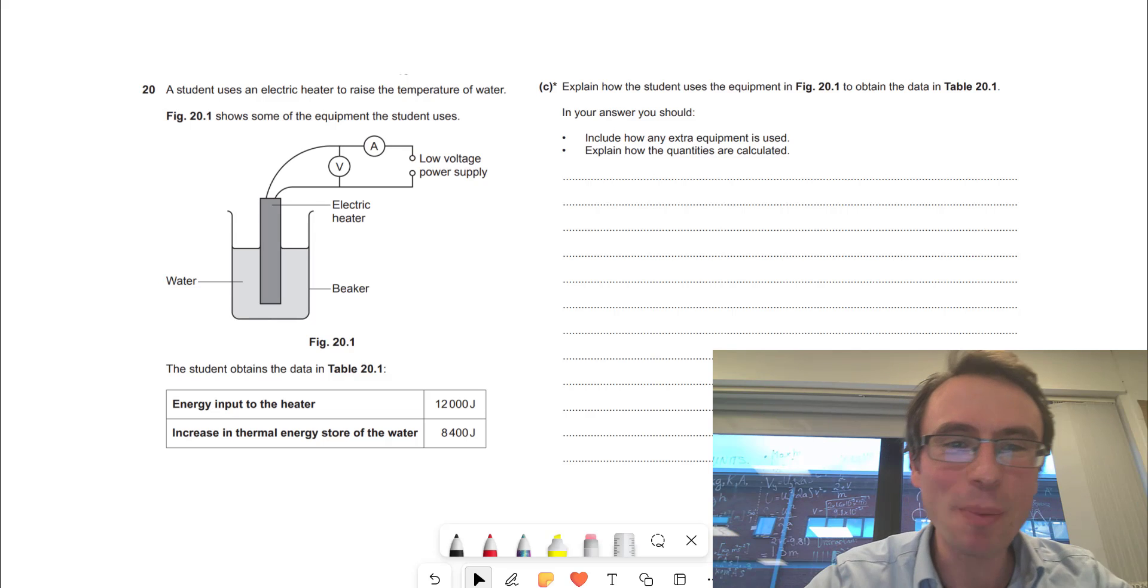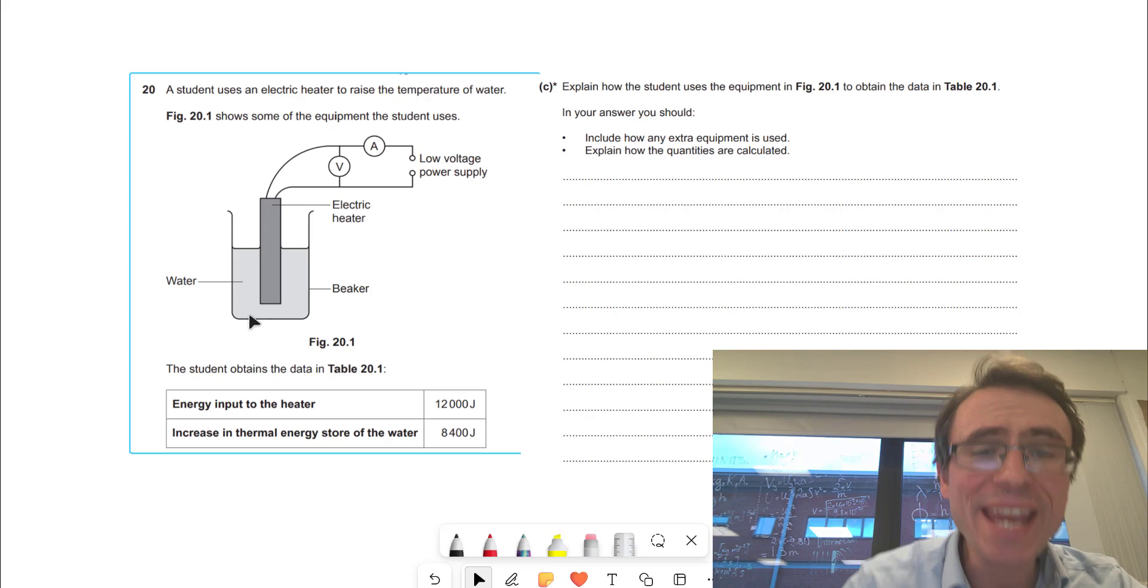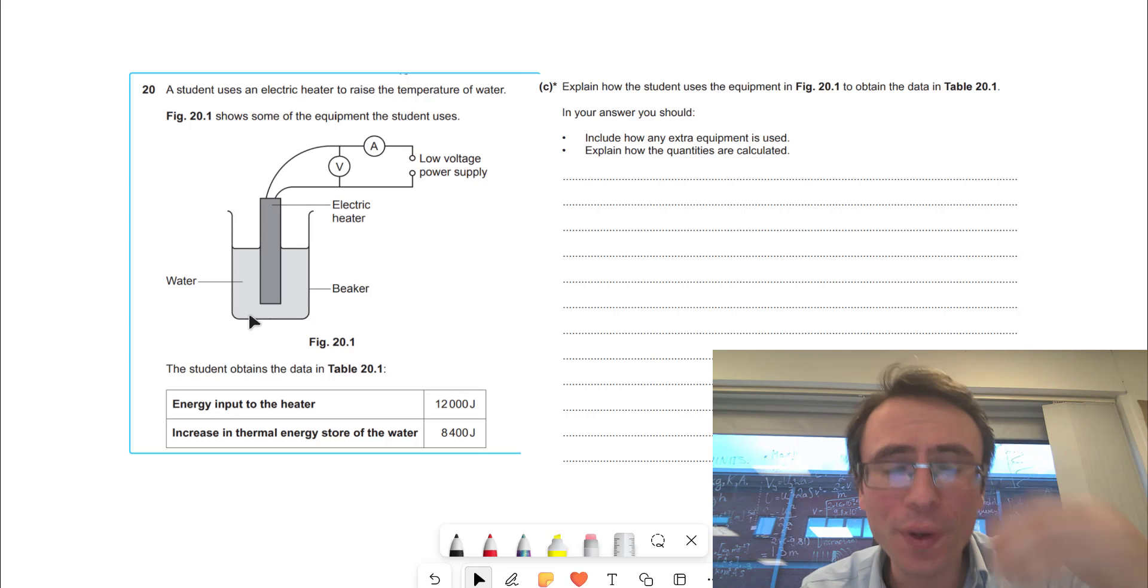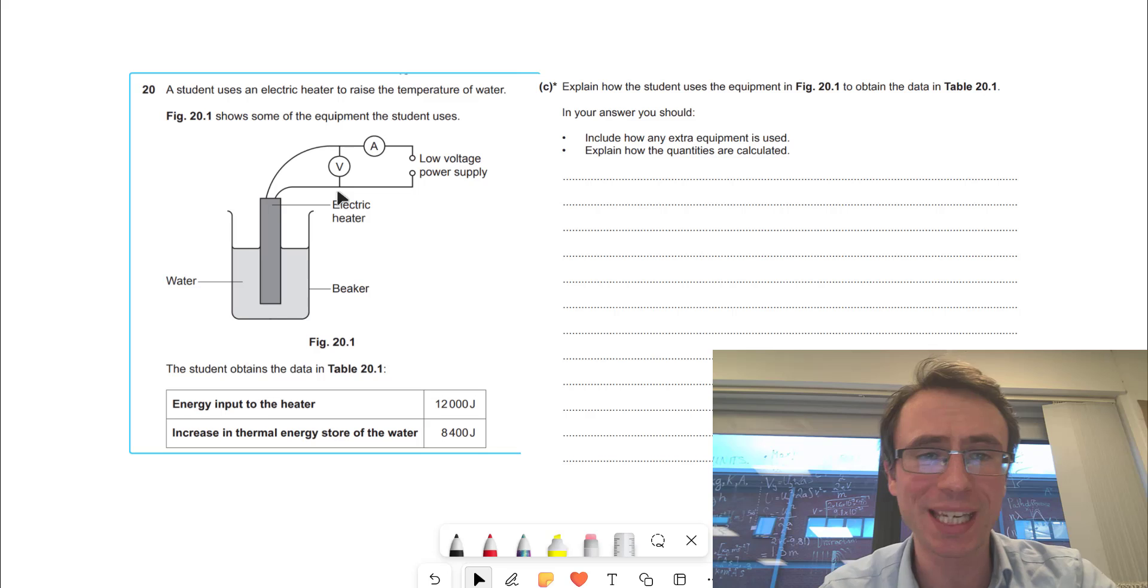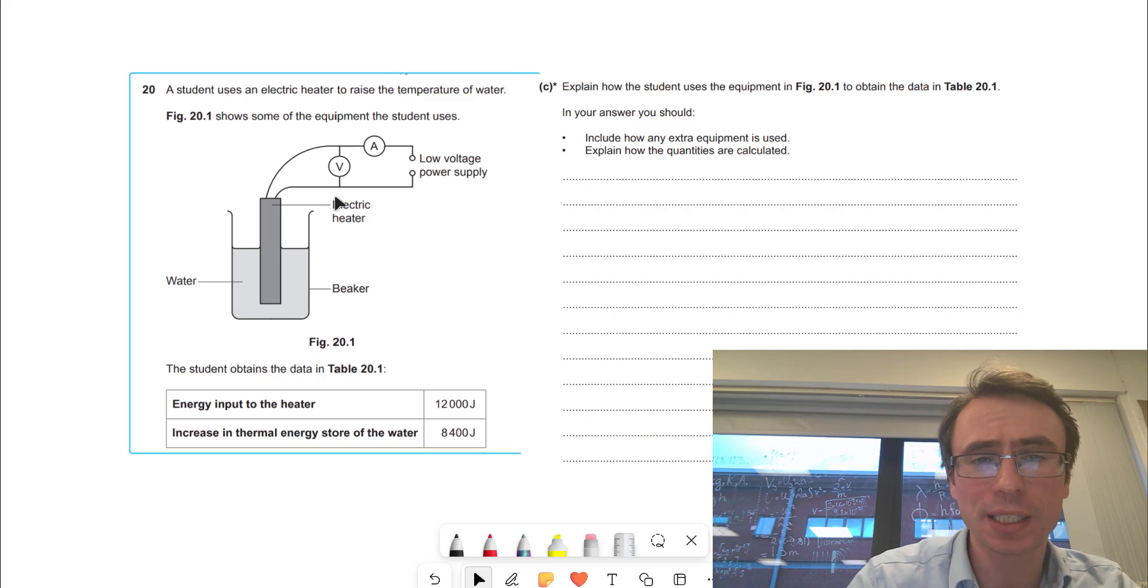Let's have a look at how to answer six marker questions in GCSE physics. Over here we have a diagram of an experiment to determine the specific heat capacity. We have a little electrical heater that's connected to a voltmeter and then an ammeter.